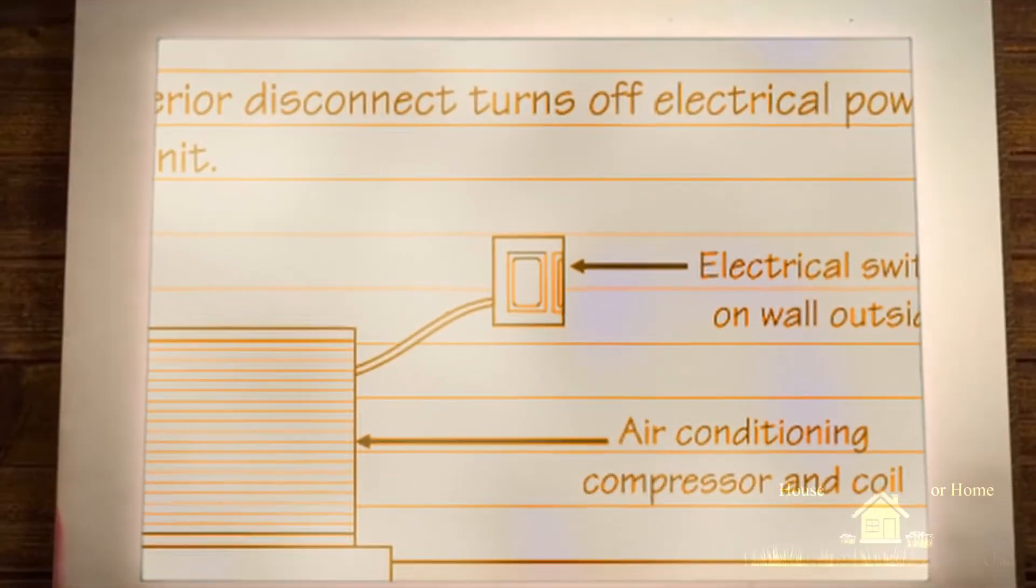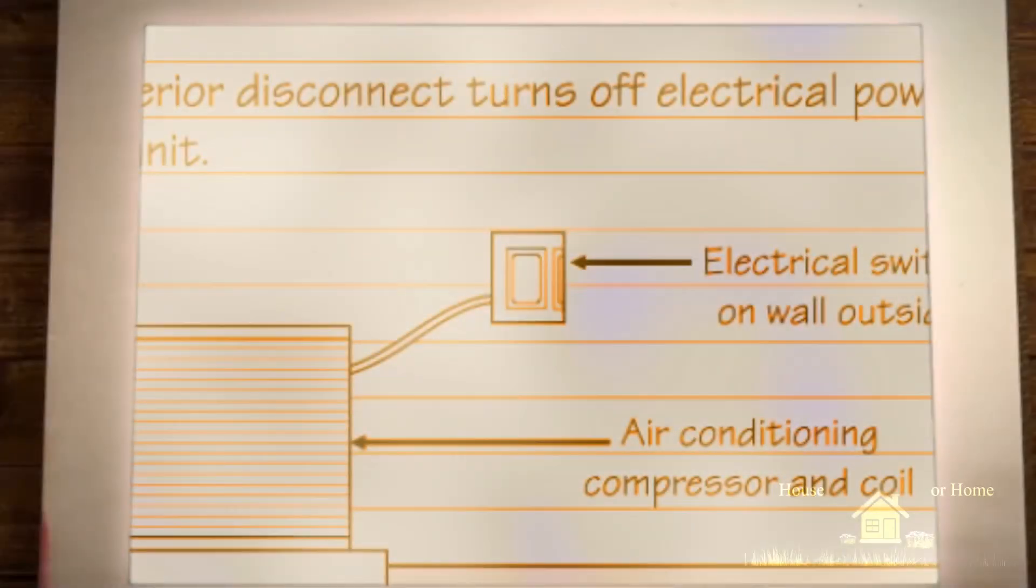This is a typical air conditioner that sits outside of your house, the compressor and coil. This is where the refrigerant is compressed.